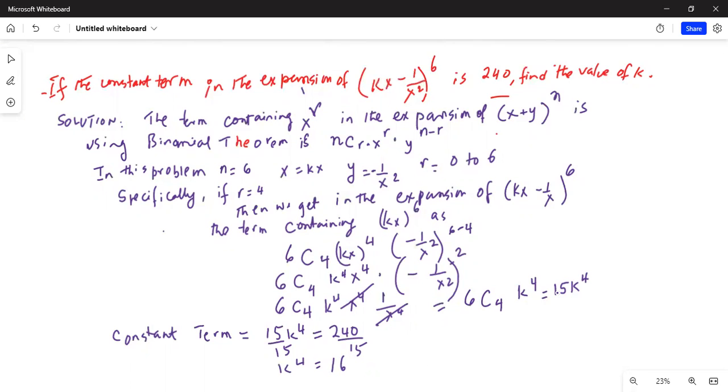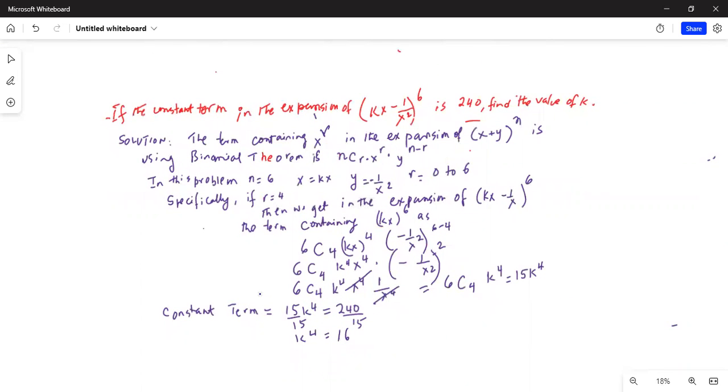So divide by 15 on both sides. k^4 equals 240 divided by 15 is 16. So we take the fourth root of k^4 equals the fourth root of 16. Now fourth root of 16 is 2, but since this is the fourth root, there's a possibility k can be negative because -2 raised to the power of 4 is also 16. Hence the answer for k is ±2. That is important, plus as well as minus 2.